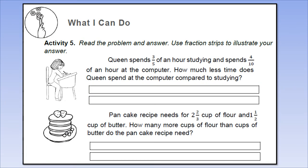For activity 5, you have to use fraction strips to illustrate your answer. Make fraction strips. Situation 1: Queen spends three-fifths of an hour studying and spends four-tenths of an hour at the computer. How much less time does queen spend at the computer compared to studying? Present your answer using fraction strips. Situation number 2: Pancake recipe needs two and two-thirds cup of flour and one and one-half cup of butter. How many more cups of flour than cups of butter do the pancake recipe need? Again, present your answer using the fraction strips.